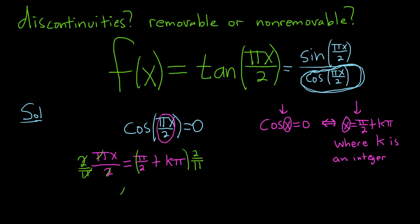We get x equals—let's work out the math. Pi over 2 times 2 over pi. I'm going to show every step. Pi over 2 times 2 over pi plus—you can skip steps, it's just sometimes mistakes happen—k pi times 2 over pi. These cancel, so we get x equals 1. These cancel, so we get plus 2k.